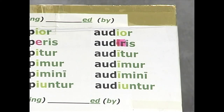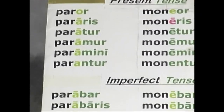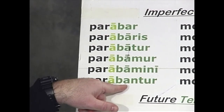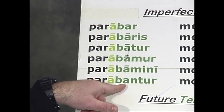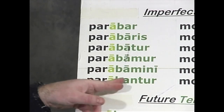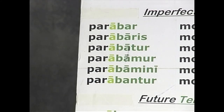That's the present passive indicative of our four conjugations. Now let's look at the imperfect passive indicative. Remember, -ba- is the tense sign for the imperfect — if you see -ba- in a verb form, you know that it's an imperfect. To that tense sign you add the passive personal endings: -bar, -baris, -batur, -bamur, -bamini, -bantur.